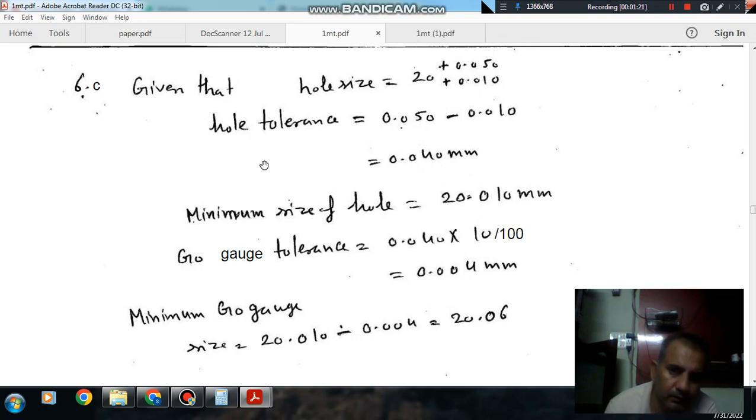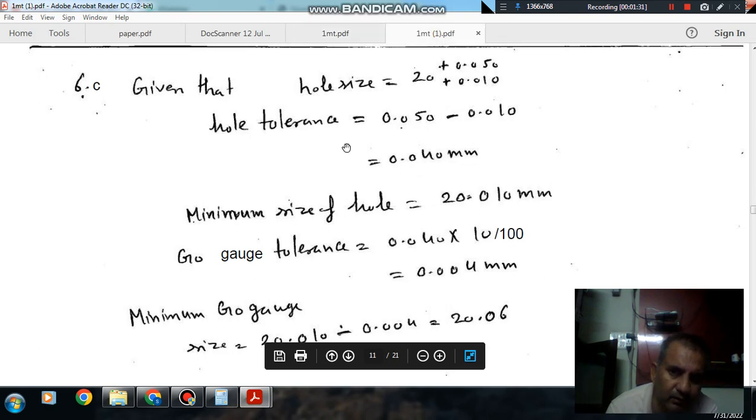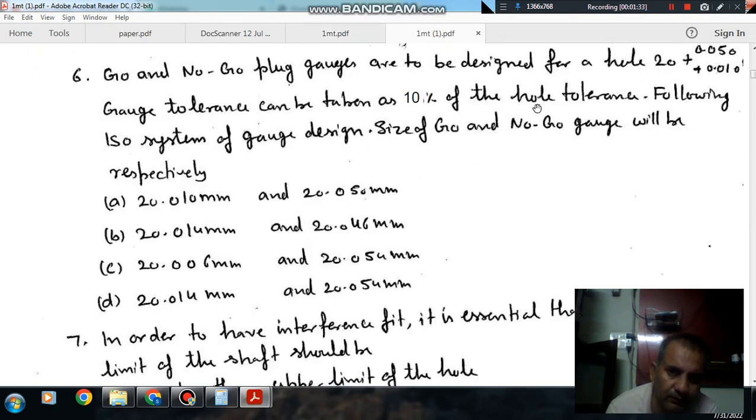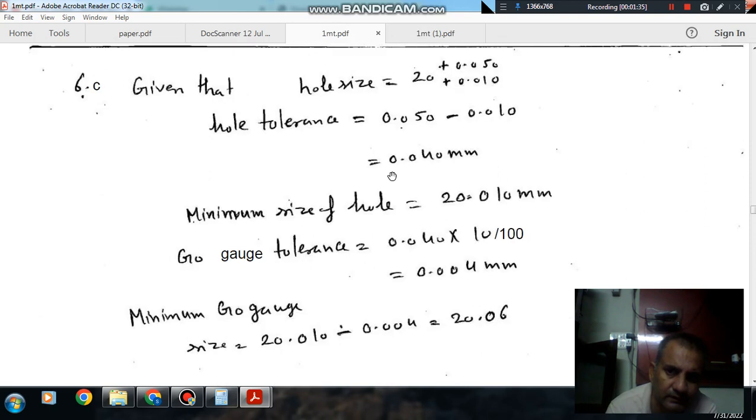The gauge tolerance... and minimum size of hole is 20.010. Gauge tolerance will be 10%. It is given that the gauge tolerance is 10% of the hole tolerance. So hole tolerance is 0.04mm.